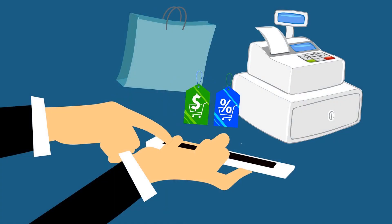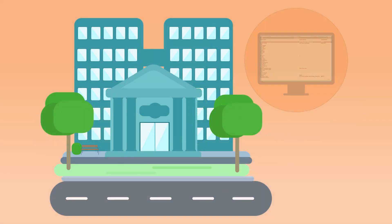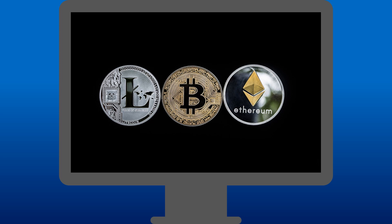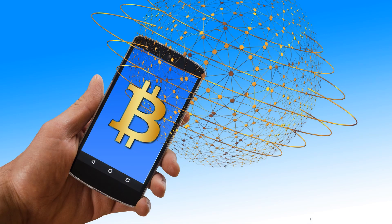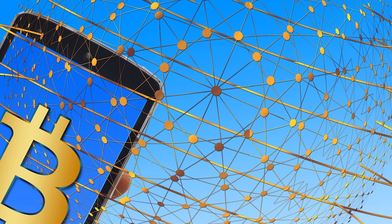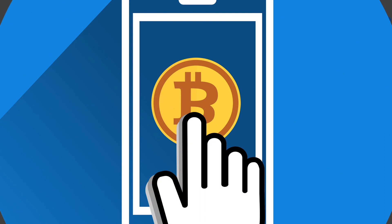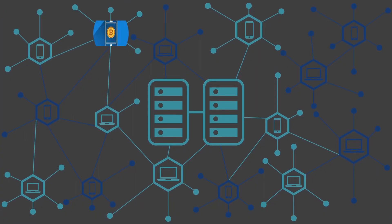Normally, when we do transactions, they are recorded in the central ledger of a bank or credit card company. But in cryptocurrency, which is not centralized in a government authority or organization, all the users record their transactions in a global ledger called blockchain. When someone sends Bitcoin to another, this exchange is recorded in this huge ledger.